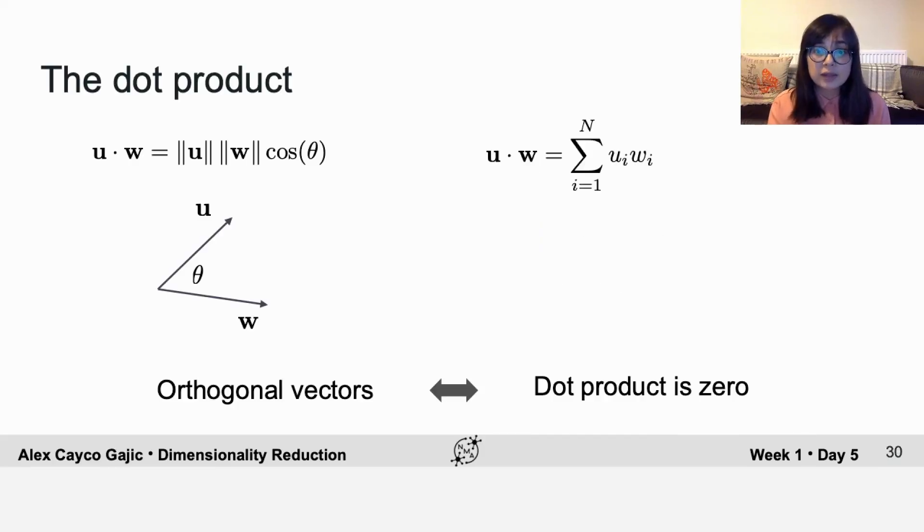So this is the algebraic definition. And it turns out that these are actually equivalent definitions if you use some trigonometric identities to prove it. So u dot w can also be written as the sum of ui times wi.